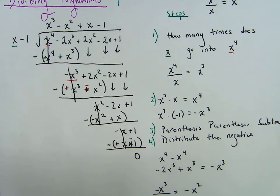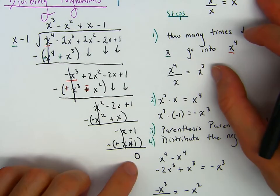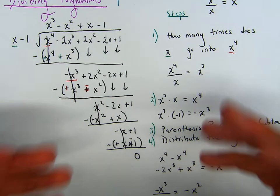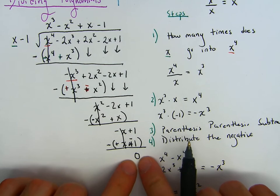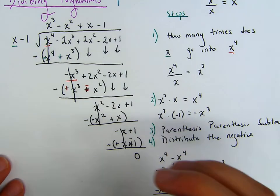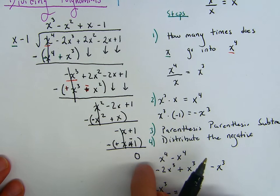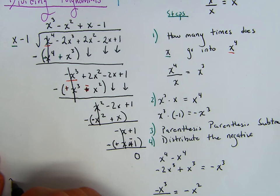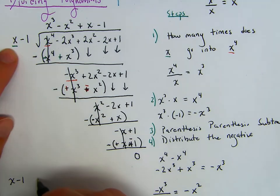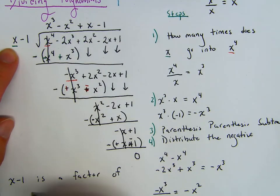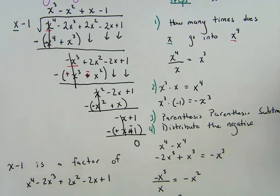And here we are. Once we get this 0, don't think the 0 just means we're done with the problem. What does this 0 signify? Try and write that sentence out. It would be: x minus 1 is a factor of x to the 4th minus 2x cubed plus 2x squared minus 2x plus 1. That's what we could say when we have a 0 at the end — this is our remainder.